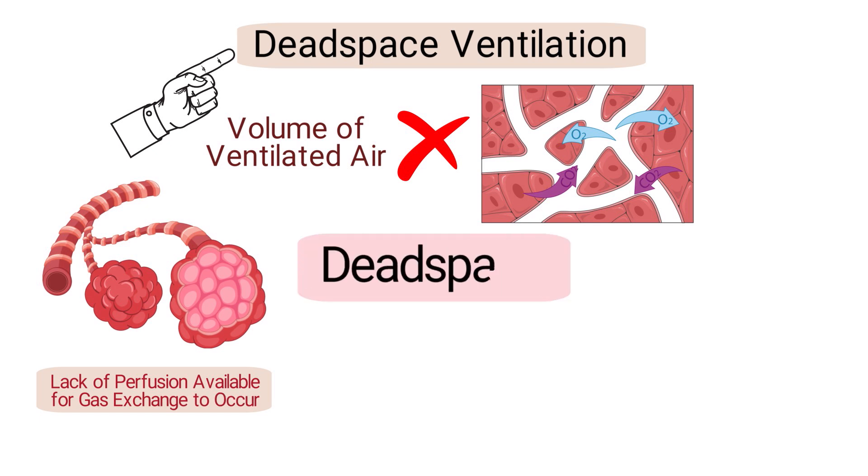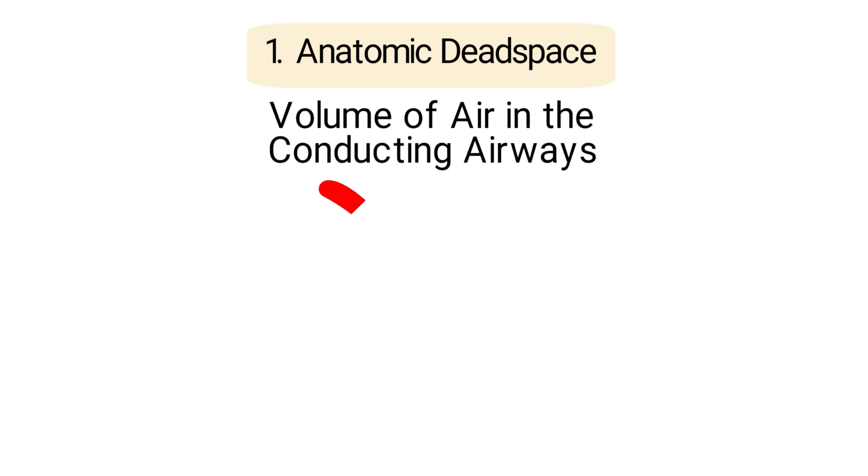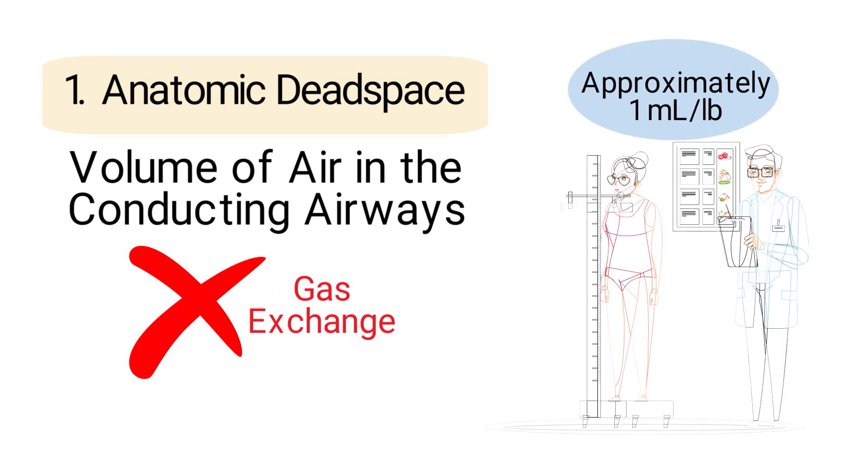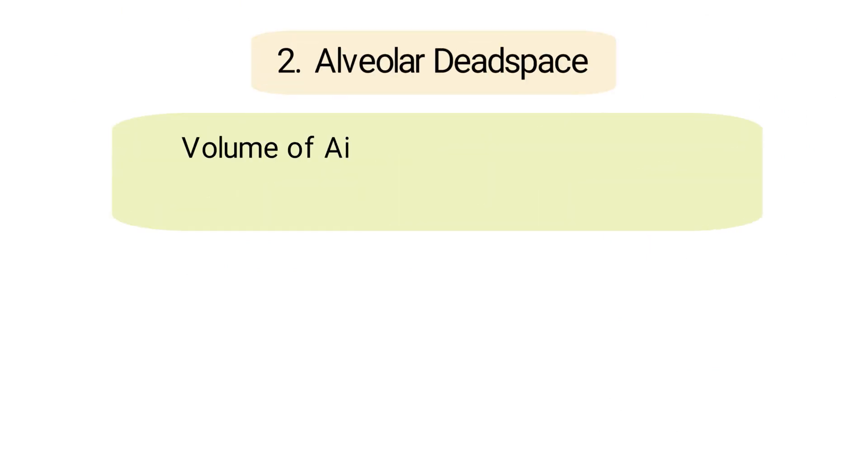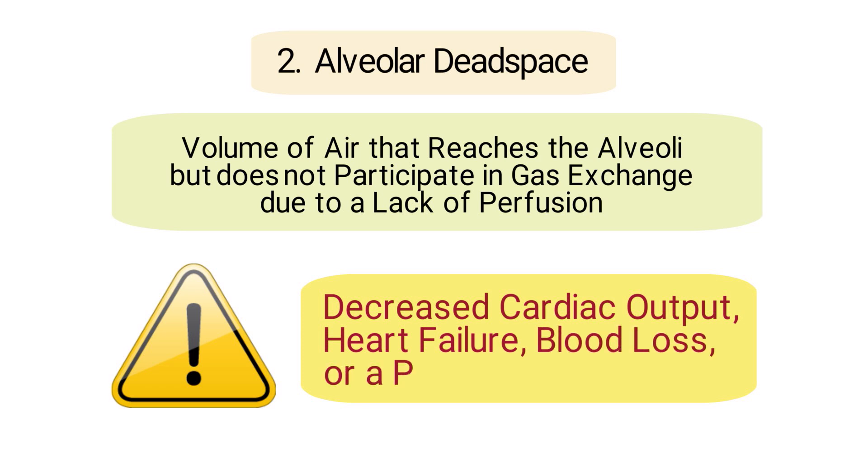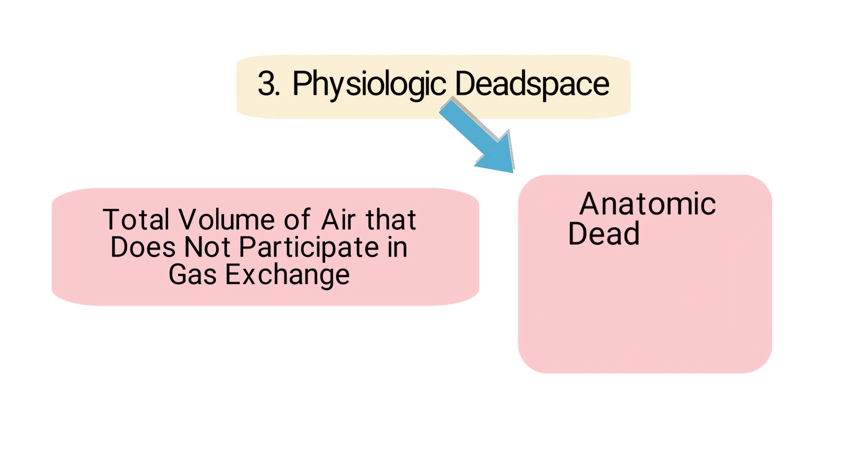There are three types of dead space: anatomic, alveolar, and physiologic. Anatomic dead space is the volume of air in the conducting airways that does not participate in gas exchange. It is estimated to be approximately one milliliter per pound of ideal body weight. Alveolar dead space is the volume of air that reaches the alveoli but does not participate in gas exchange due to a lack of perfusion. This can occur due to decreased cardiac output, heart failure, blood loss, or a pulmonary embolism. Physiologic dead space is the total volume of air that does not participate in gas exchange; therefore, it is the sum of the anatomic and alveolar dead space.